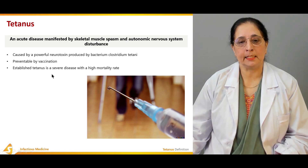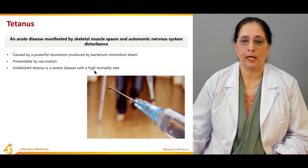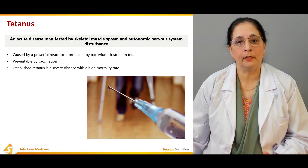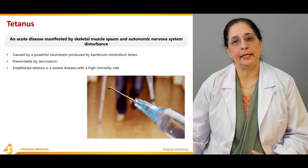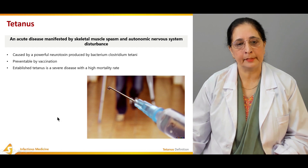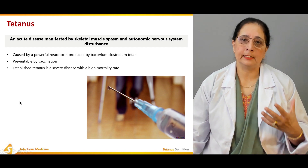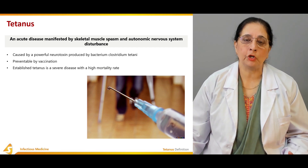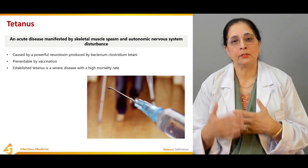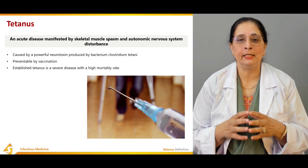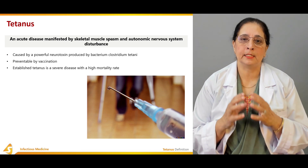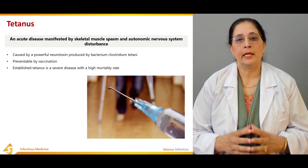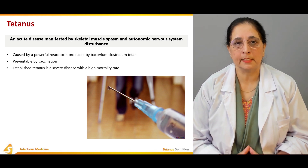Established tetanus is a severe disease with a high mortality rate. If not treated and if severe, it is associated with a high number of deaths. It is the infection caused by Clostridium tetani, which produces neurotoxin that acts mainly on the nervous system, causing spasm of skeletal muscle and disturbance of the autonomic nervous system.